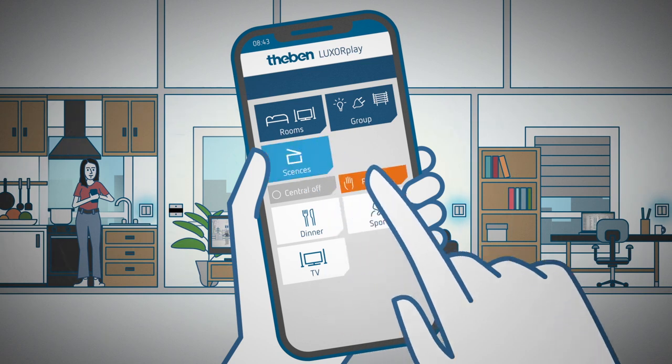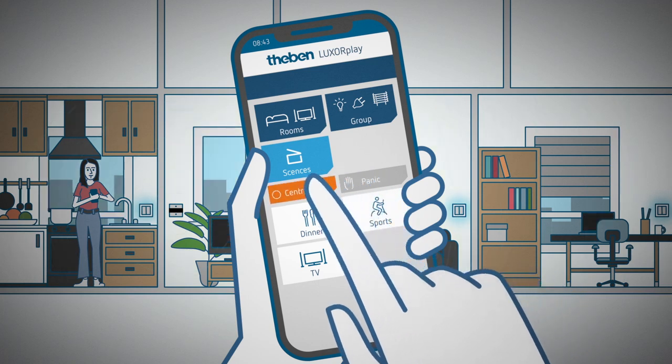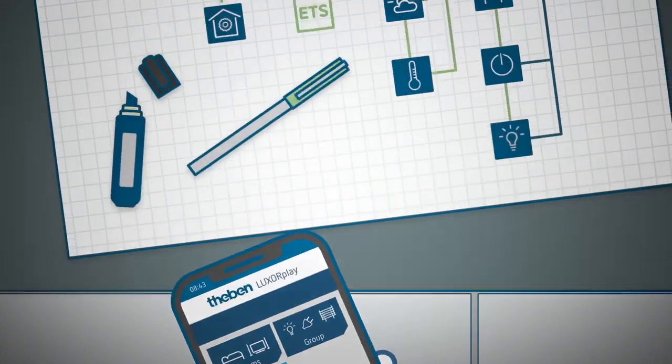With panic function and time control. And of course central off. Then everything is off when you are out of the house. Luxor living smart start offers you a total of 30 functions.